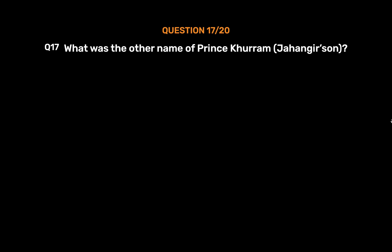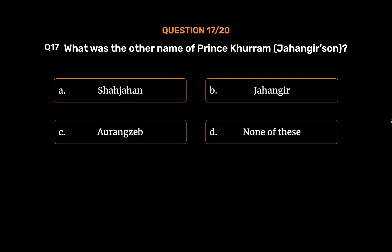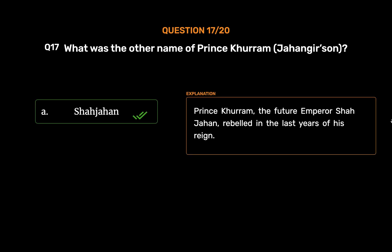Question 17: What was the other name of Prince Khurram, Jahangir's son? Option A: Shah Jahan. Option B: Jahangir. Option C: Aurangzeb. Option D: None of these. The correct answer is Option A, Shah Jahan. Prince Khurram, the future Emperor Shah Jahan, rebelled in the last years of Jahangir's reign.